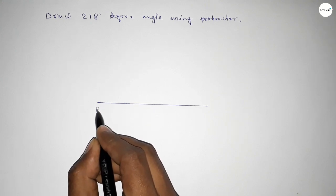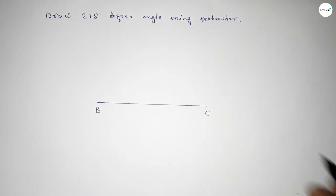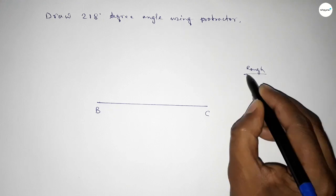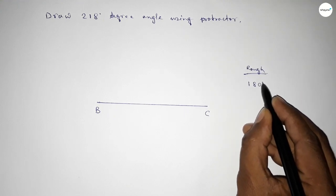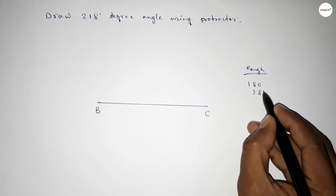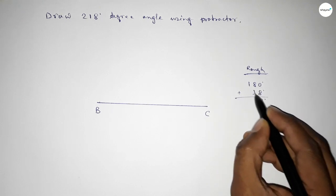First drawing here a line and taking here point B and here point C. Now roughly discussing some calculation here. So if we add 38 degree angle with 180 degree, then we can get 218 degree. So this is 180 plus 38 equals 218.